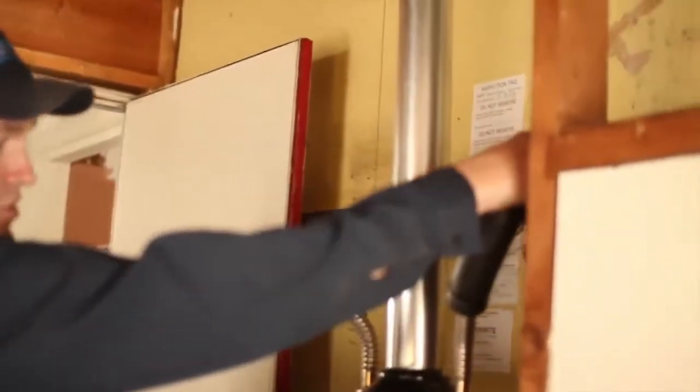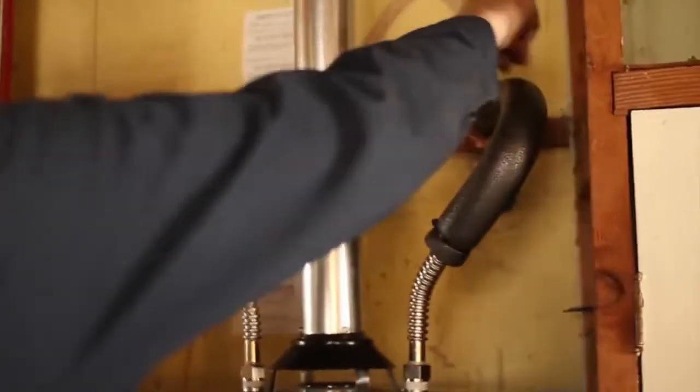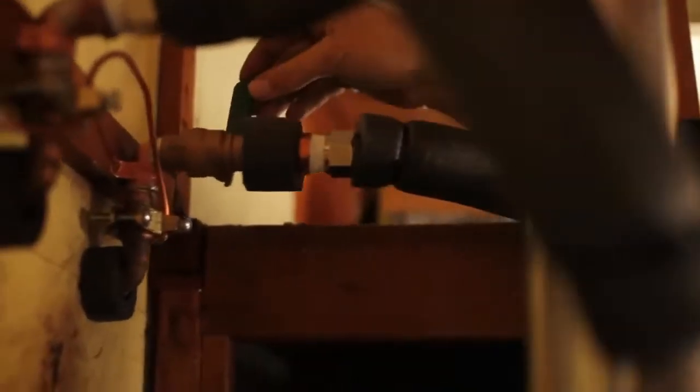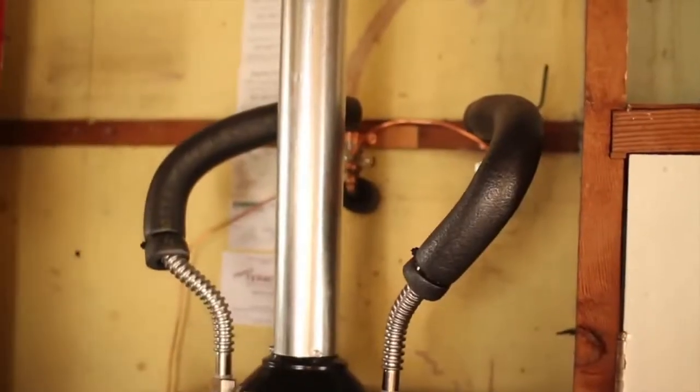On the upper right side here, this is your cold water inlet. This is a ball valve right here which goes straight up. It shuts the water off to the water heater.